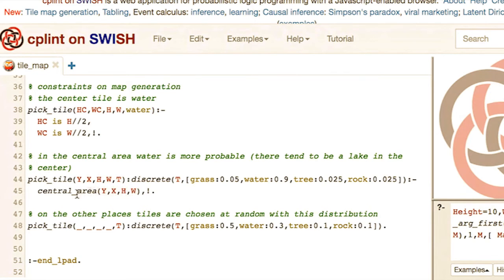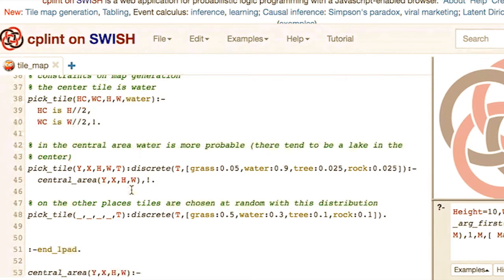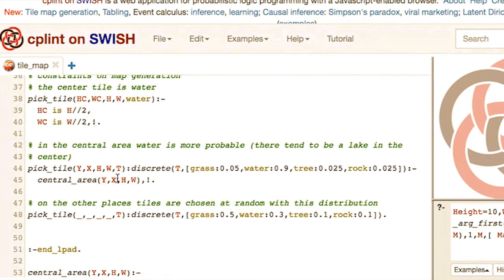The argument T is grass with probability 0.05, water with probability 0.9, a tree with probability 0.025, and a rock with probability 0.025. This clause has a body which says that this clause applies only when the row and the column indicated by Y and X belong to a central area. The central area is a predicate defined below, which is meant to indicate the area around the central tile. As you can see in the body, you have a cut, and you have a cut as well in the clause before, meaning that to choose a tile, you first try the clauses in order, and the first clause which matches returns the tile.